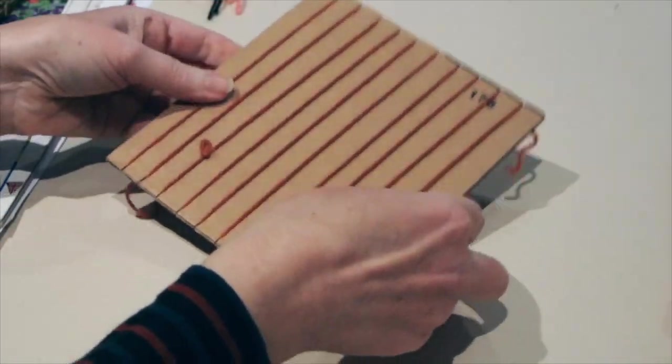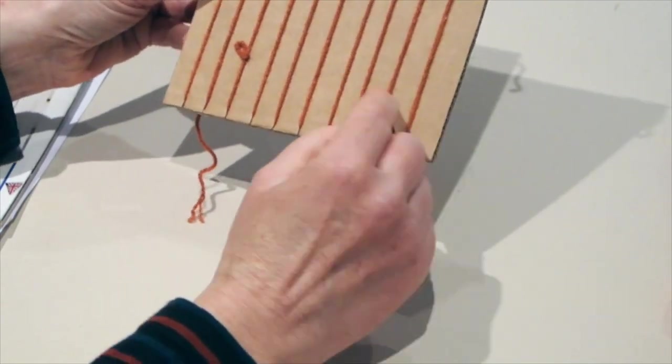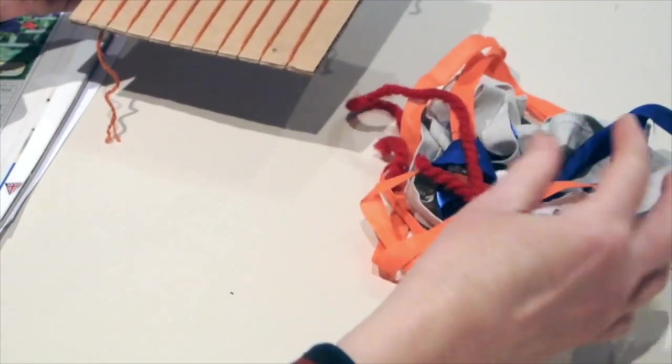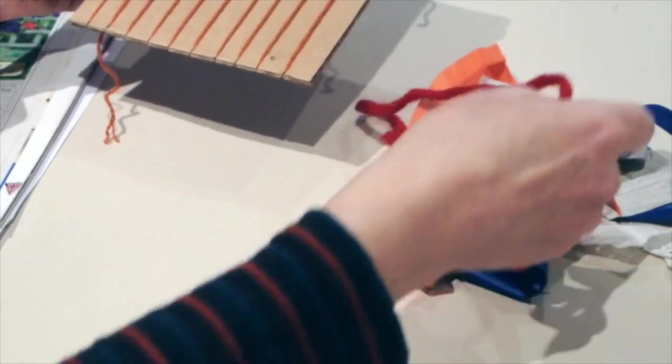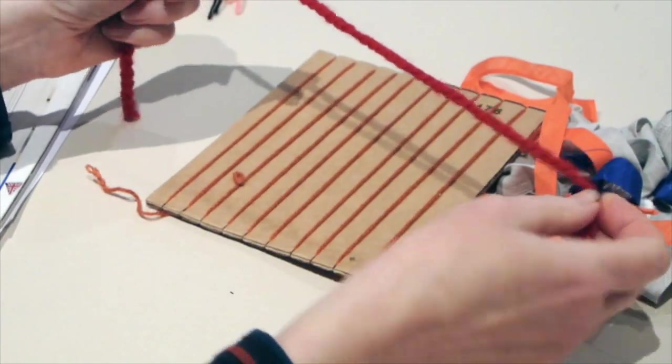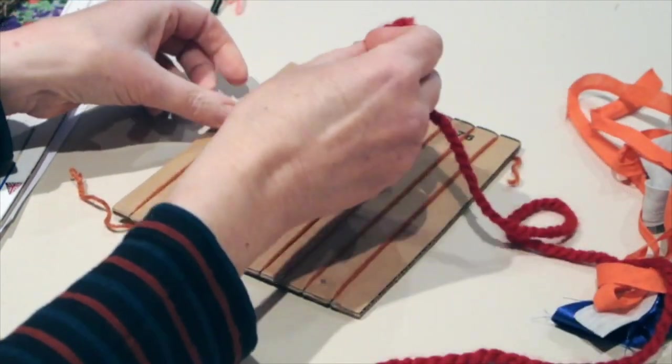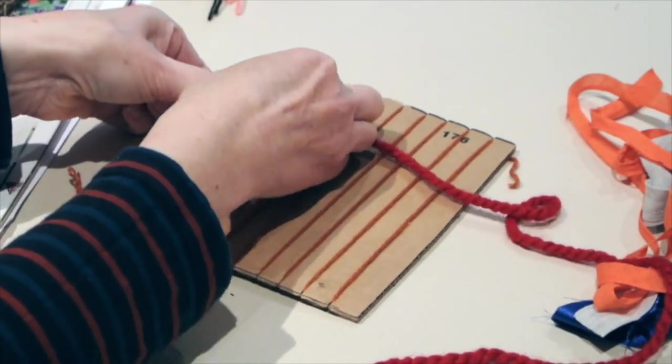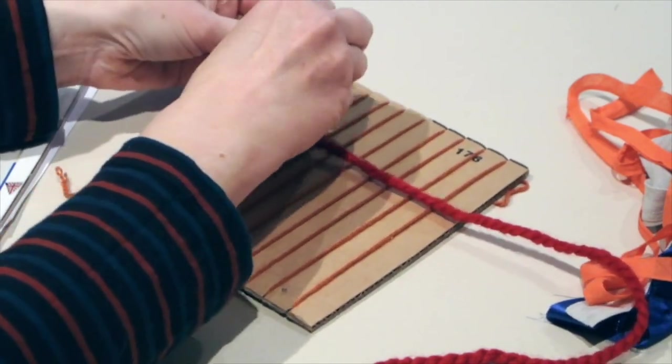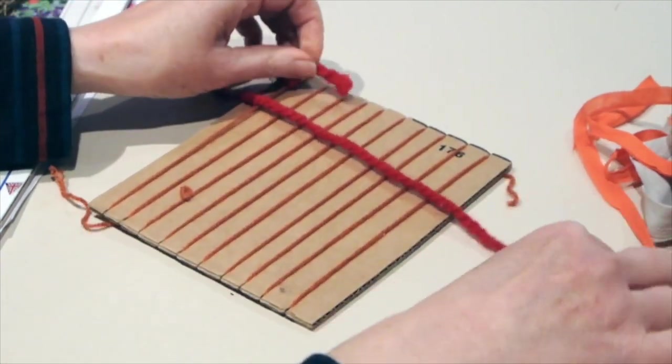Once we've created our loom by weaving all the thread around, we're going to start weaving. From my fabrics, I'm going to choose some red wool. This red wool is quite thick, so it should be quite easy to weave with. To join it to the loom, it needs to be tied to the first thread with quite a firm knot.